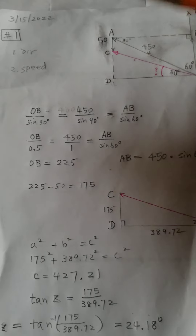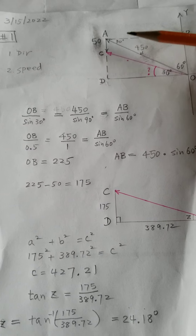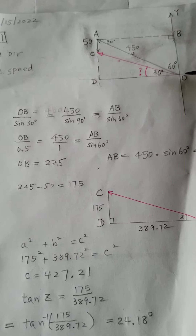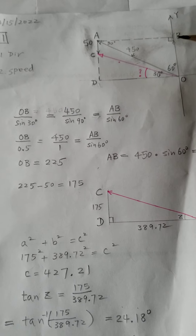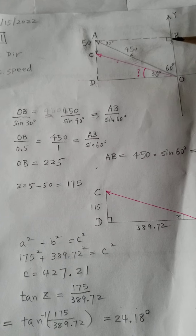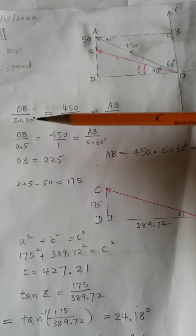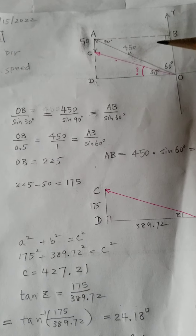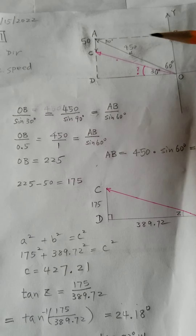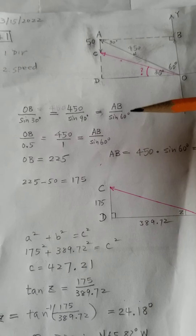So let's see. We have the big triangle — it's like ABO. We're going to do law of sines: OB over the opposite, which is 30 degrees. So OB over sine 30 is going to be 450 over sine 90 degrees, equals AB over sine 60 degrees. This is law of sines.